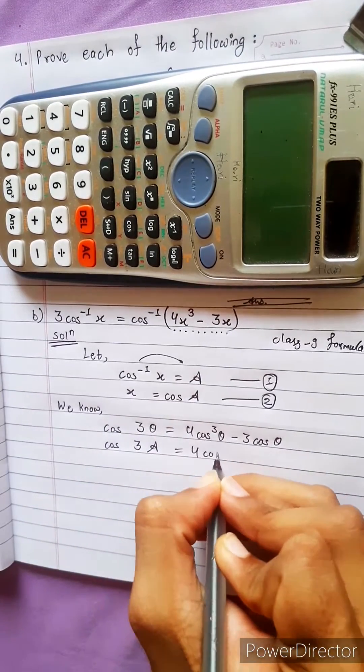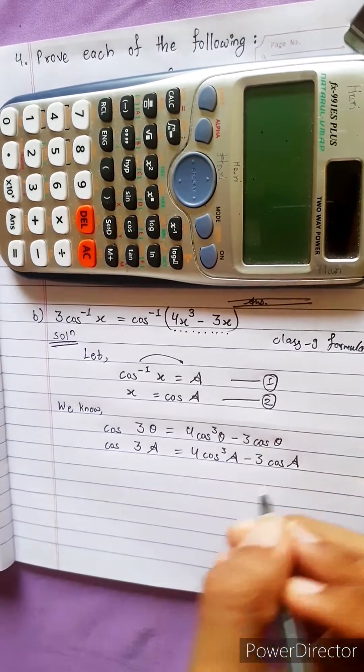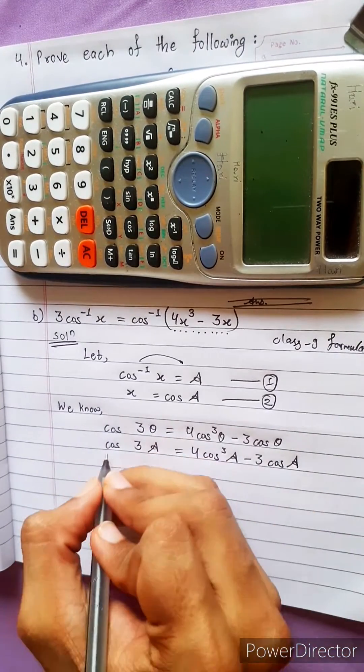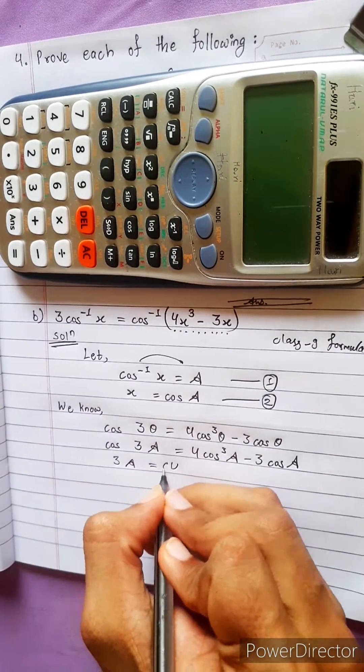Now what to do? Cos transfer to this side, remaining here: 3A equals to... here will be cos.